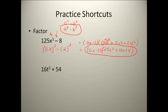Next one: 16t³ + 54. Again, I notice I only have 2 terms, so I'm going to use the shortcuts. This time I have a plus sign, and the only shortcut with a plus sign is a³ + b³. I'm going to see if I can get it to fit that pattern. I notice that I can pull a 2 out — they're both even numbers. So I set that 2 out in front, and when I do that I'm left with 8t³ + 27.